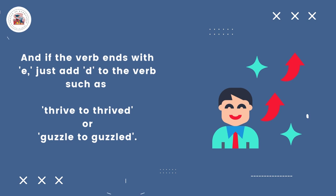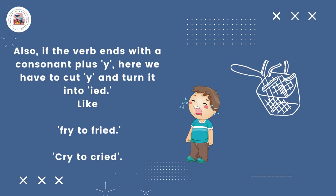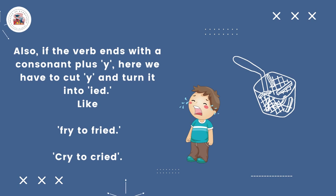Also, if the verb ends with a consonant plus Y, we cut the Y and turn it into -ied. Like: fry → fried, cry → cried.